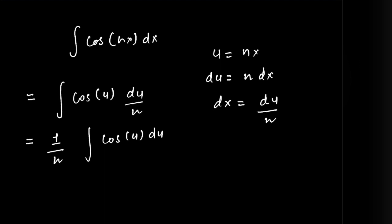Now the cos of u du would be equal to the sine of u, which we have to remember. So, or the antiderivative of cosine of u is equal to the sine of u. So that would be equal to sine of u divided by n plus c, where c being a constant of integration, and its value depends on the initial values.